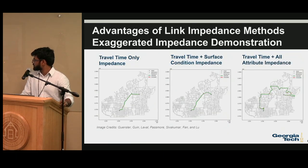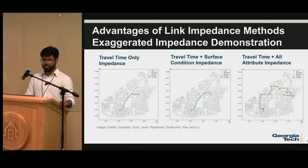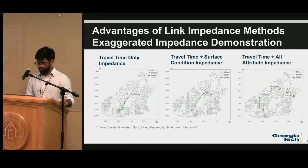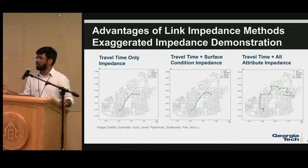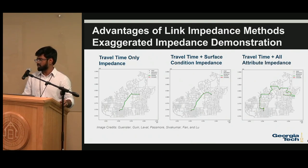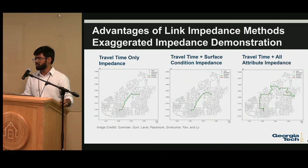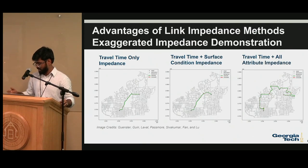Here is a demonstration. The first map uses travel-time-only impedance with a constant speed to calculate routing. If you add impedance based on surface condition, you can see the route gets somewhat diverted based on sidewalk condition. On the final map, we factor in all design parameters — presence or absence of curb ramps, and the condition of the curb ramp itself — producing a realistic route that is much more different from the output of current navigation applications.